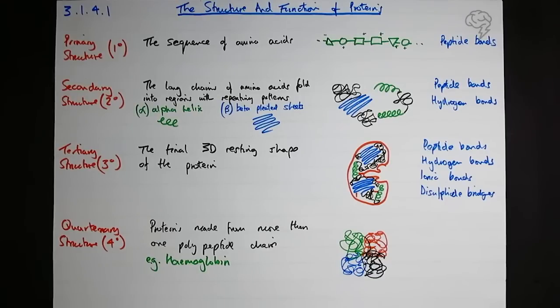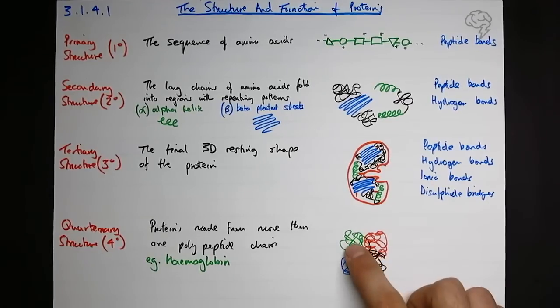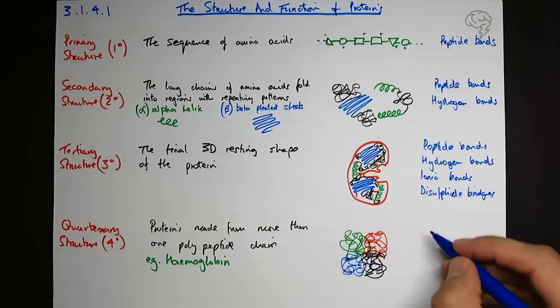So within this polypeptide chain there would be alpha helices and beta pleated sheets, and the same would apply to all of those. And what bonds in there? Well, it's basically exactly the same - it's just a slightly more complicated version of the tertiary structure. So we have peptide bonds again.